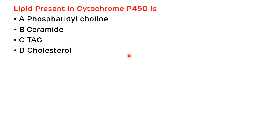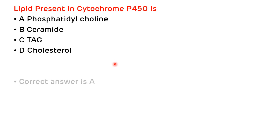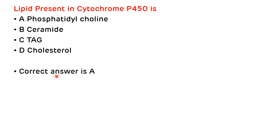Third question: the lipid present in cytochrome P450 is A) phosphatidylcholine, B) ceramide, C) triacylglycerol, or D) cholesterol. The correct answer is A — phosphatidylcholine, which is responsible for the activity of cytochrome P450.